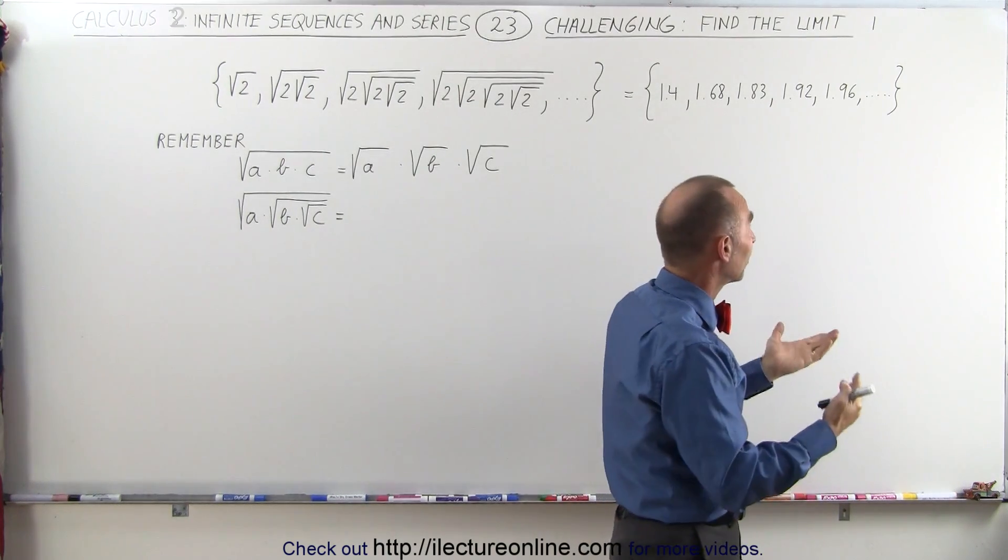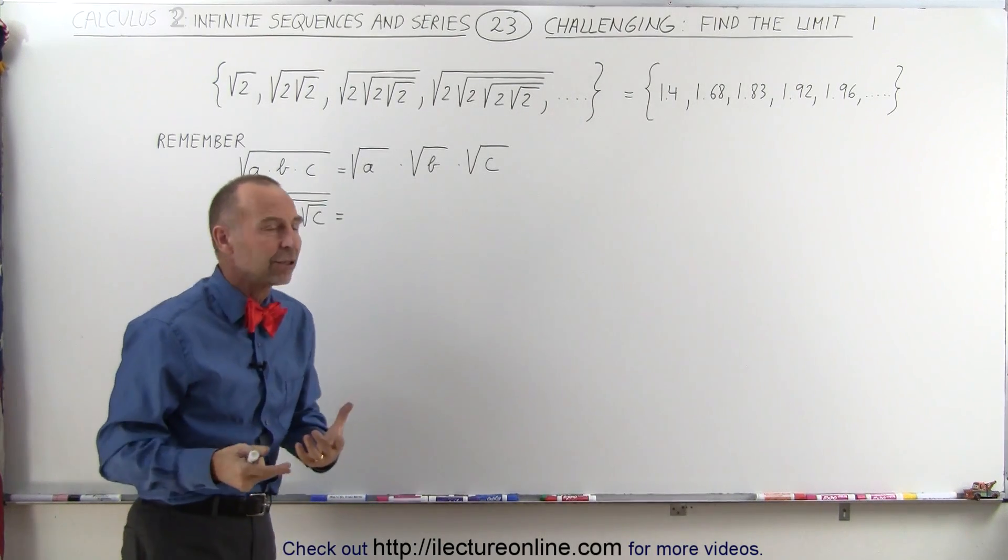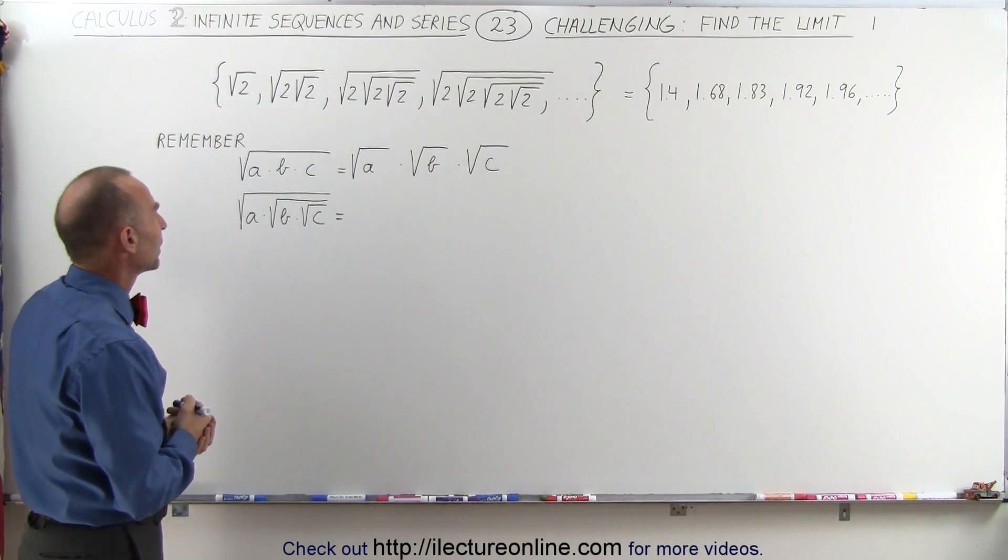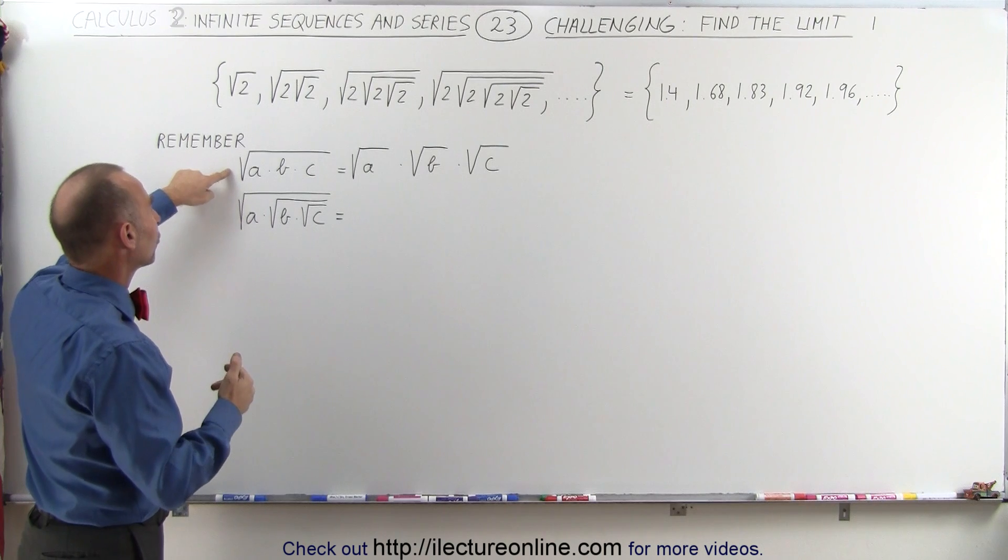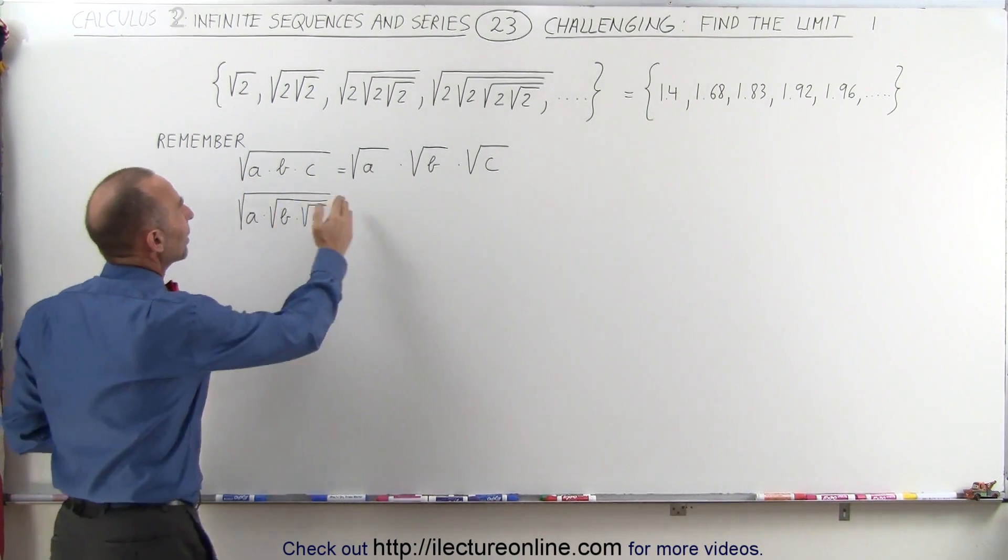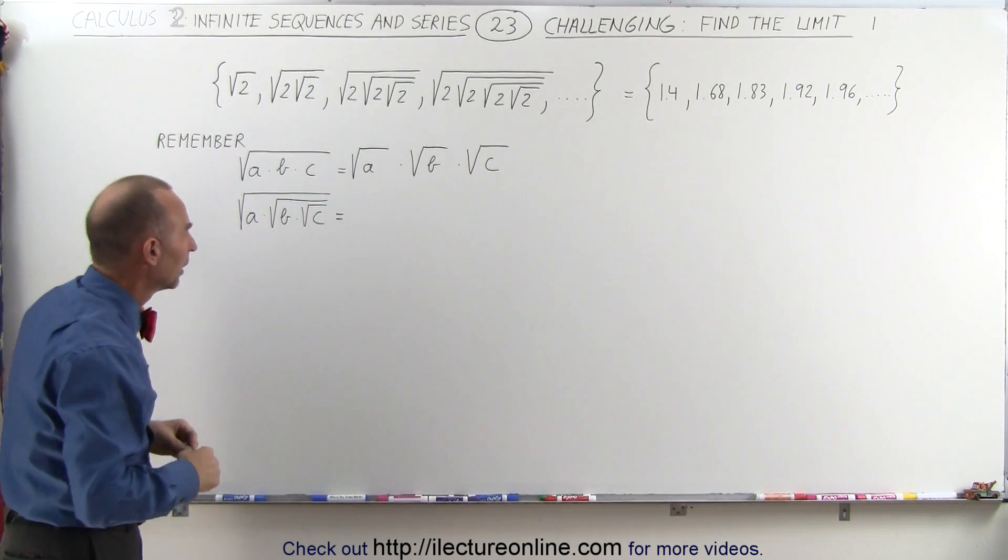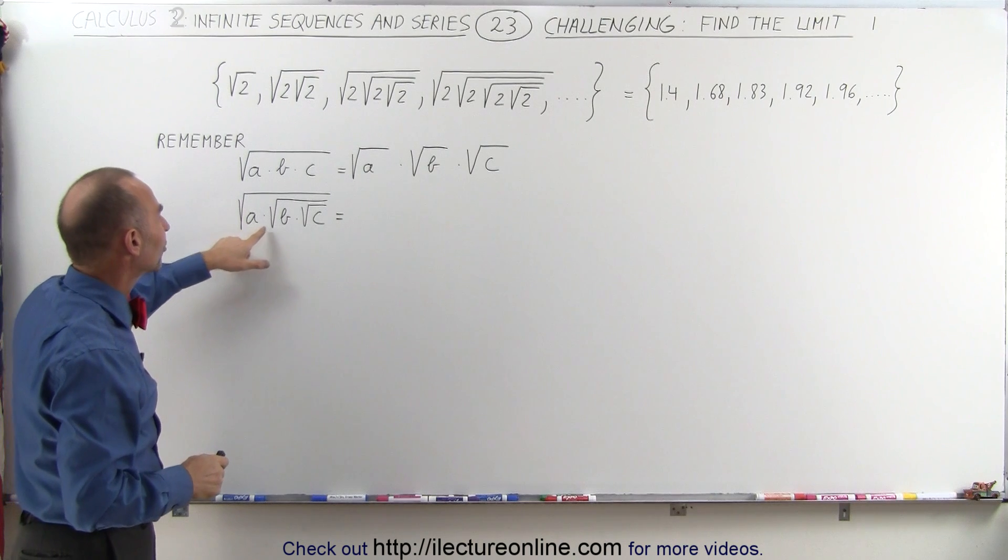but it would take a while before you get some certainty to that. Or maybe we can find an exact value using some clever technique. So here we remember that the square root of the product of terms like a times b times c can be written as the individual square roots multiplied together, which means if you have something that looks like this,